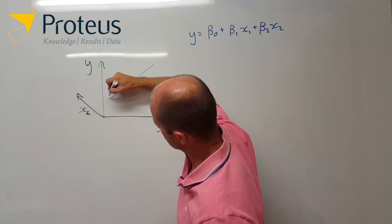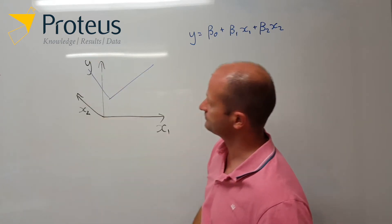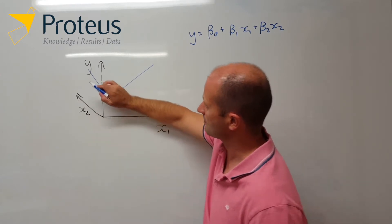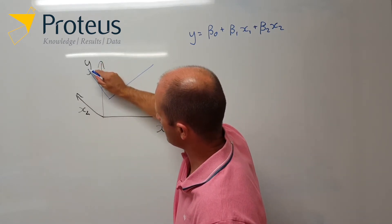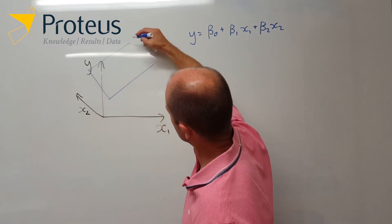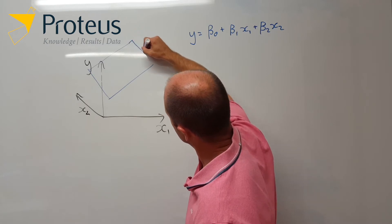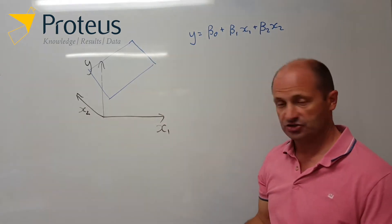And so what we're saying is that there's also a relationship between y and x2 as well. And what that does is that we also have this line now in this other direction, in this other dimension. And so what we really have now is a 3D plot of some sort of relationship between y, x1 and x2.